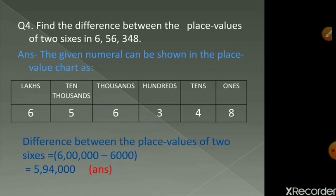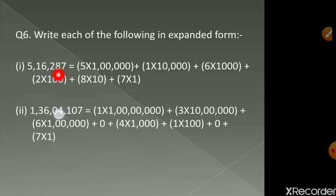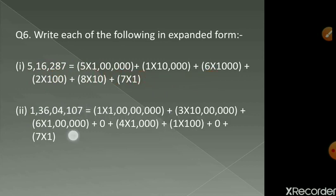Question number 6: write each of the following in expanded form. I have done two questions for you. For 516287 — this is ones, tens, hundreds, thousands, ten thousands, lakhs — we write it as: 5 × 1 lakh + 1 × 10 thousand + 6 × 1 thousand + 2 × 100 + 8 × 10 + 7 × 1.